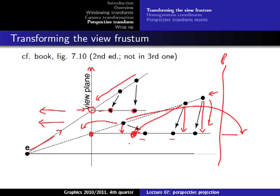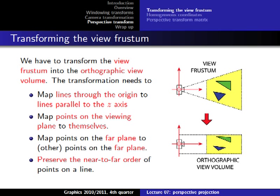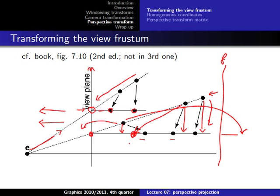The straight-down projection cannot be done with matrix multiplication. Since our whole pipeline is defined by matrix multiplication, it would be inefficient to have one step that doesn't fit the framework. If we want to use matrix multiplication we cannot achieve the straight-down projection, but we can achieve a transformation that follows these conditions: lines going through the origin should be mapped to parallel lines along the z-axis.